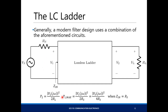The maximum power absorbed by the ladder is V1² over 2RS. This comes from the matched condition, where Zin equals RS. In this matched condition, the power developed in RS equals the power at P1 maximum. That's why P1 max is in terms of RS, which is Vs squared over 8RS.